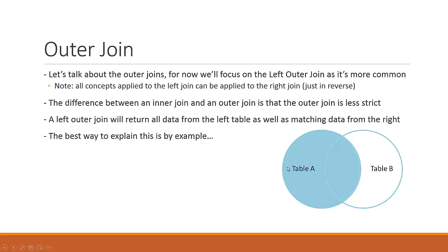But since we're talking about the left join, this is what we see. The difference between an inner join and an outer join is that the outer join is less strict. Inner join is more strict, outer join is less strict in terms of the result set — the results you get back once you perform the join.